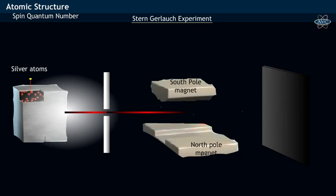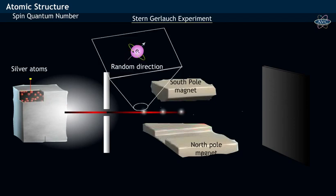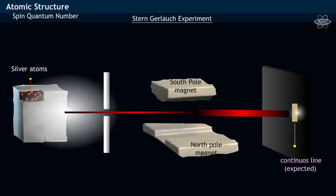Stern and Gerlach expected that the silver atom having magnetic moment in random direction gets deflected and appears as a continuous line on striking the photographic screen, which actually doesn't happen. This was in accordance with classical theory.